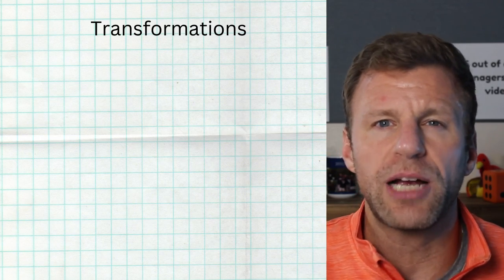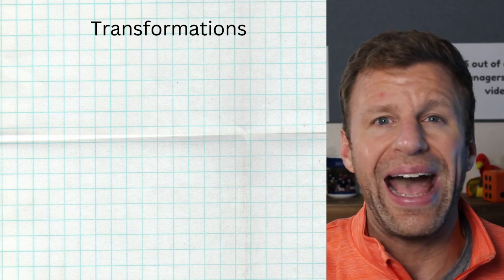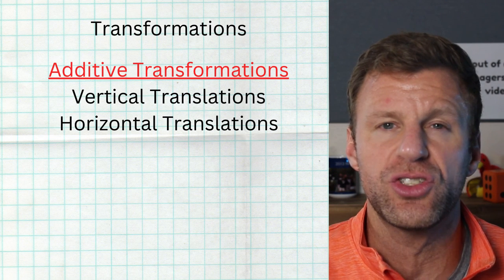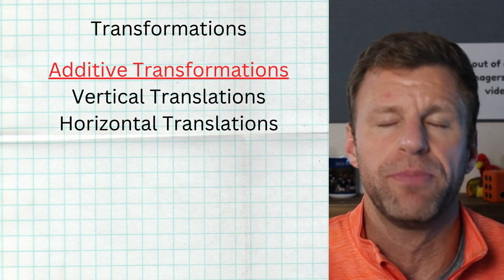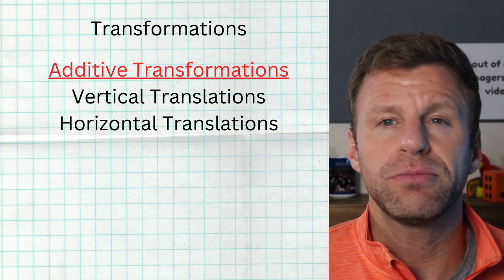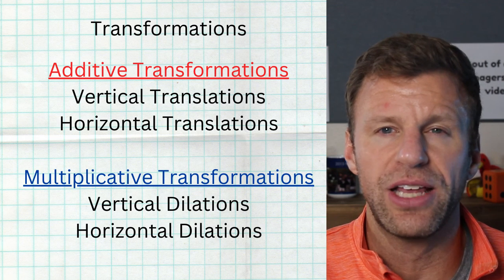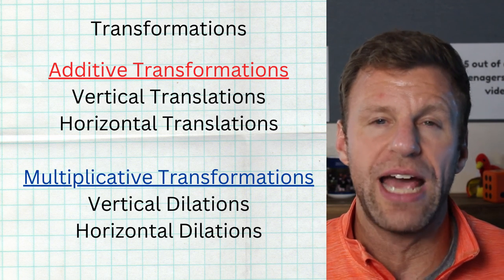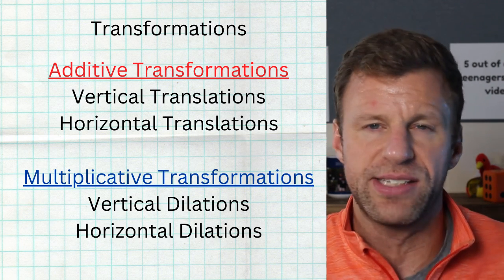So first, let's quickly talk about the different types of transformations there are. First, we have additive transformations. Additive transformations can be vertical translations or horizontal translations, pretty easy. Then we have multiplicative transformations. These are vertical dilations and horizontal dilations. The thing I like to remind students most is that when it comes to vertical transformations, it's always exactly what it says.